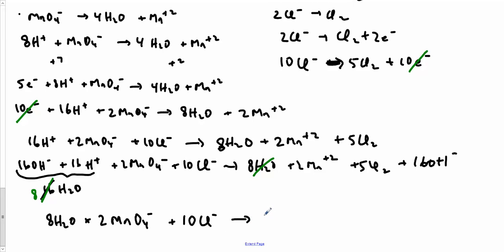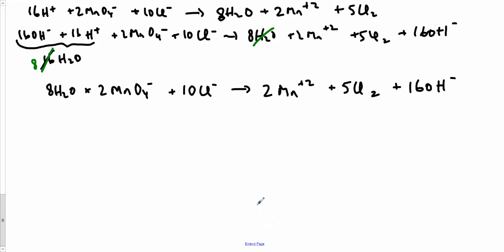and I'm going to get 2 Mn plus 2s, 5Cl2s, and 16 OH minus. Now if I look carefully, 2 Mn's, 2 Mn's, 10, 10Cl's, 16 O's, 8 and then another 8, 16H's, 16H's, wonderful.